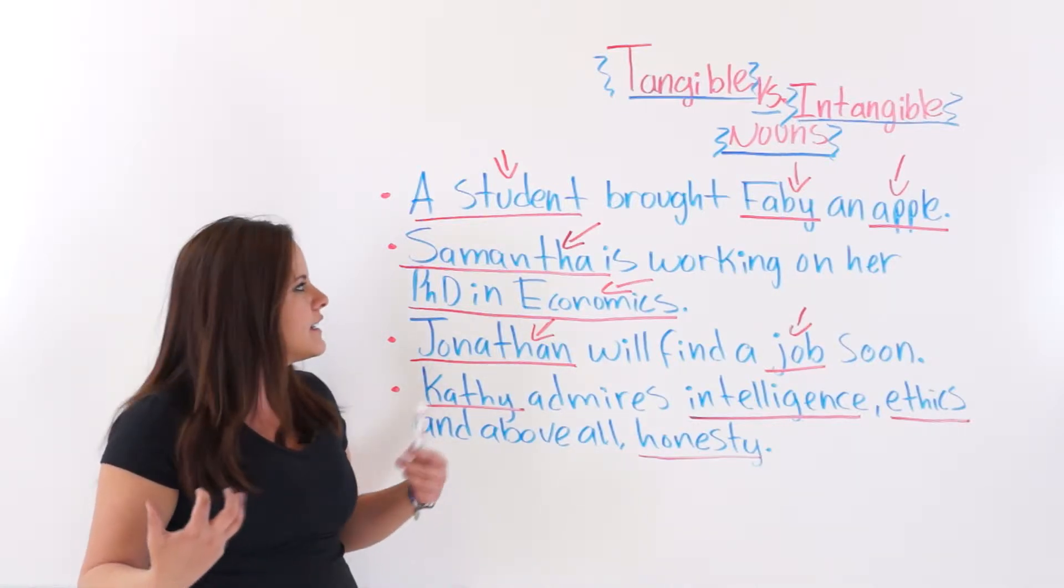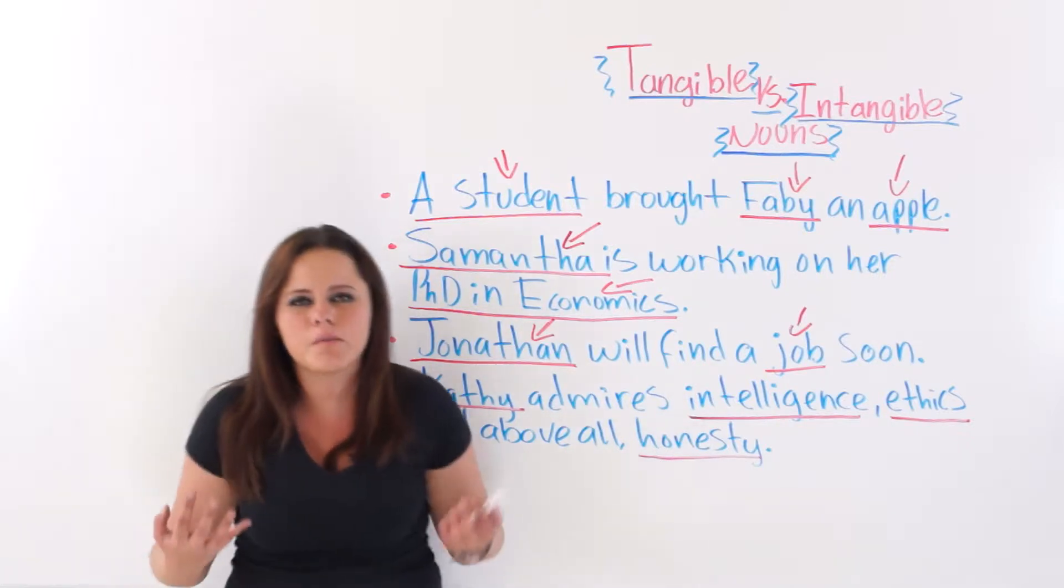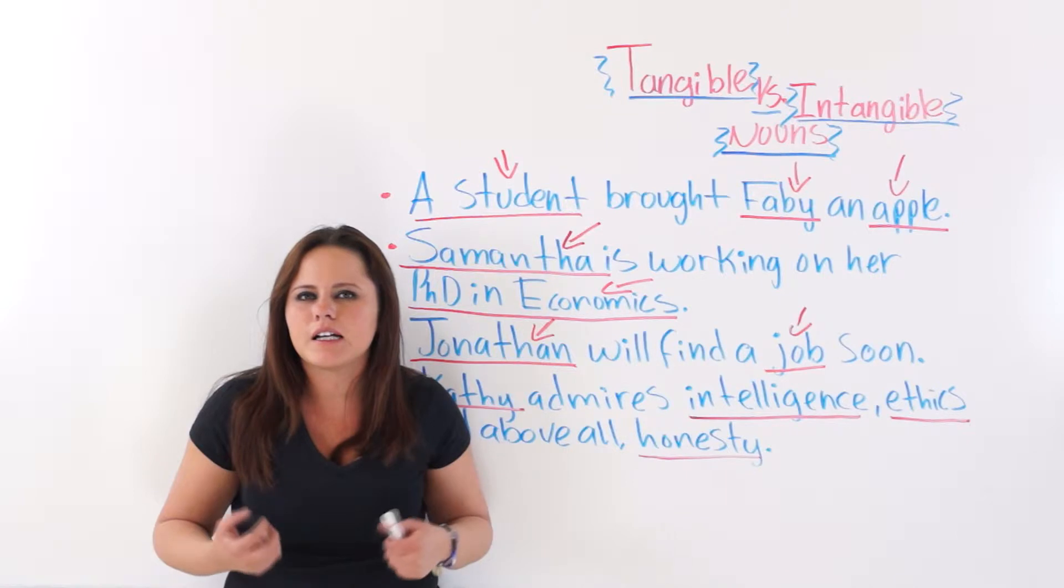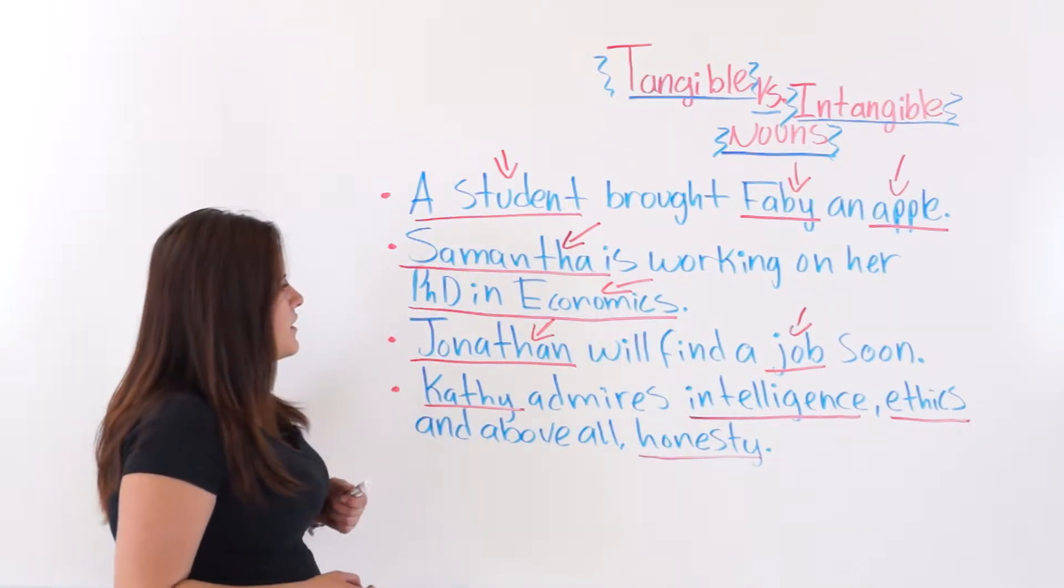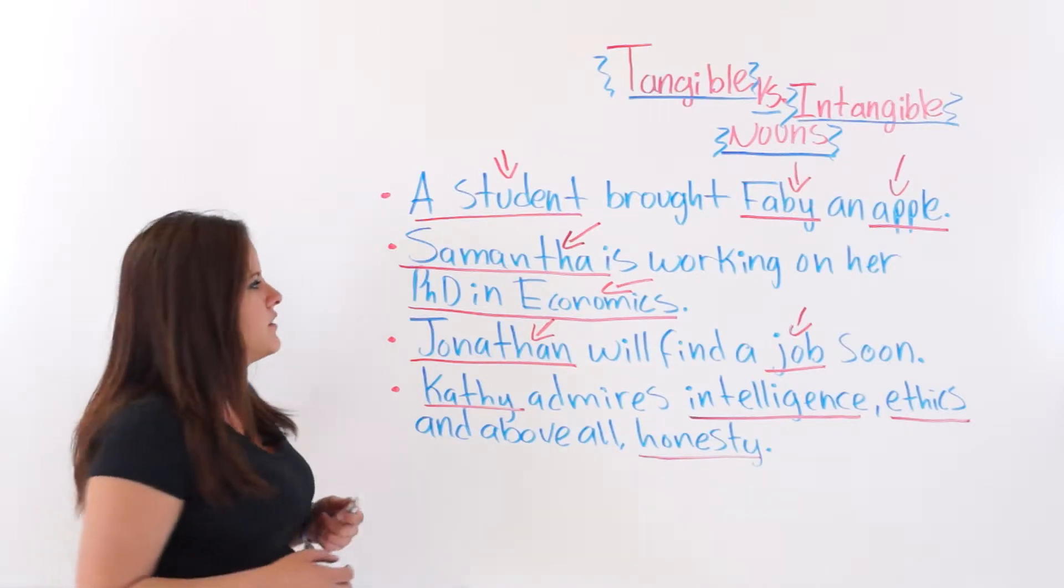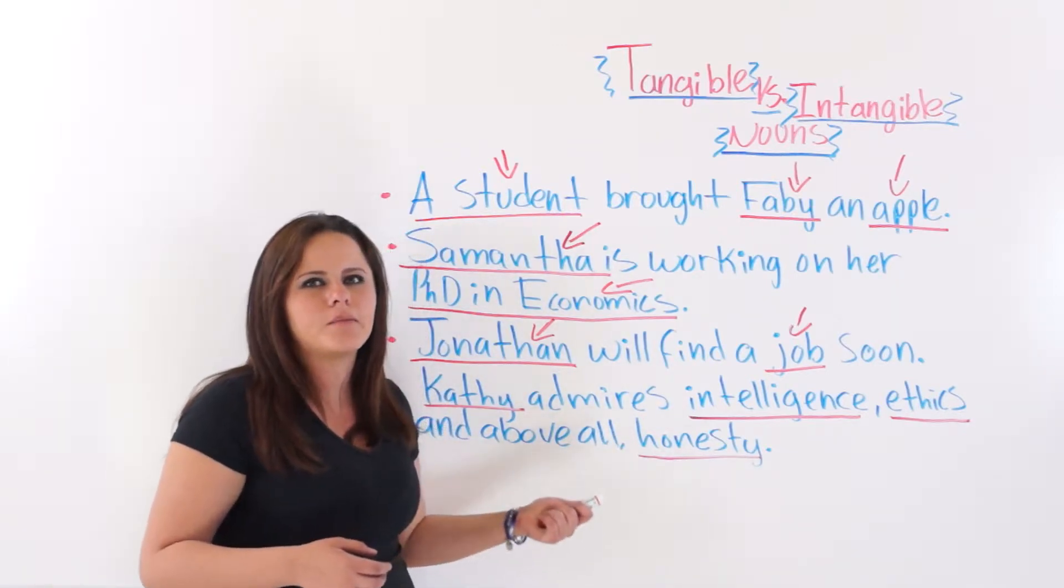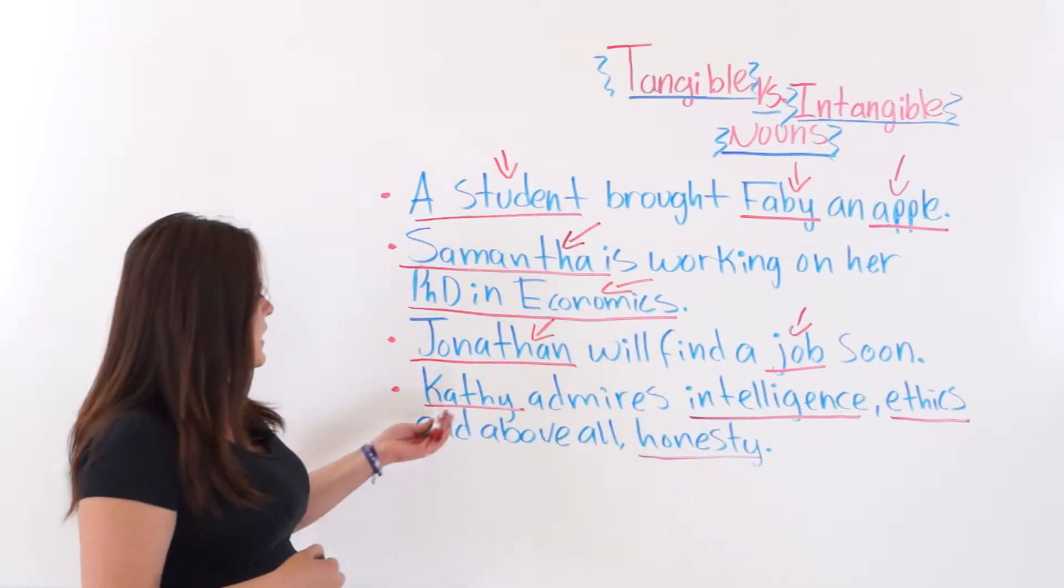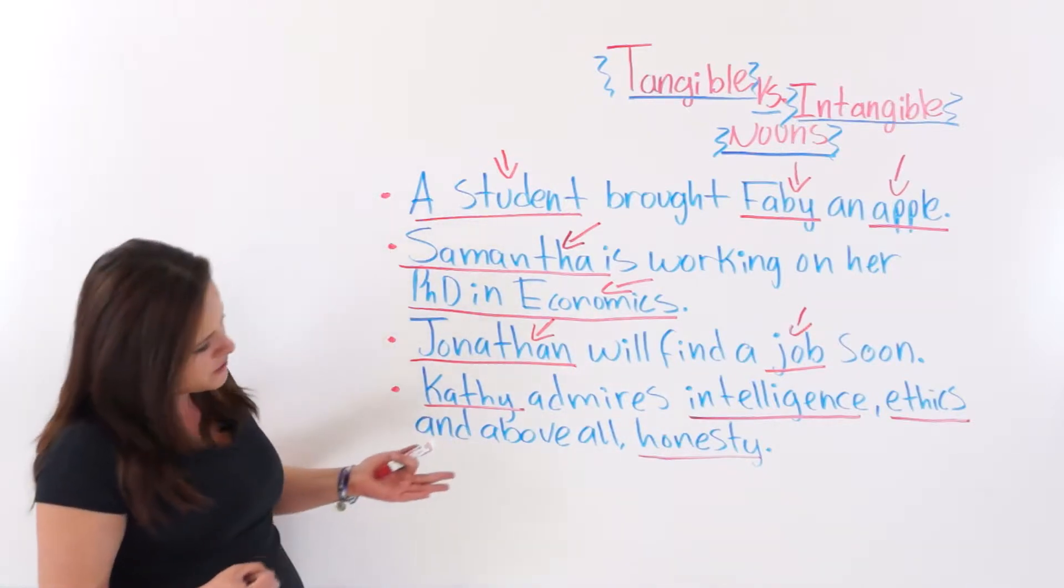So remember, intangible nouns are some things, or some nouns, that cannot be perceived by your senses. And the next one says Jonathan—tangible noun—will find a job—intangible noun, intangible noun—because it is an idea or a thought.